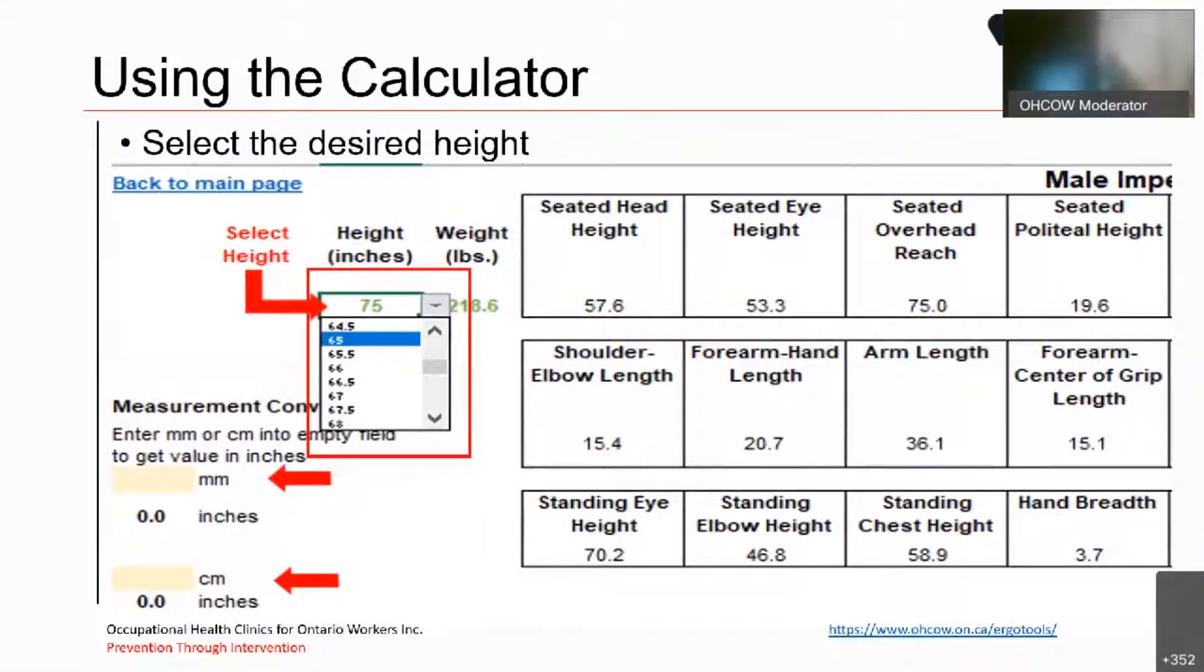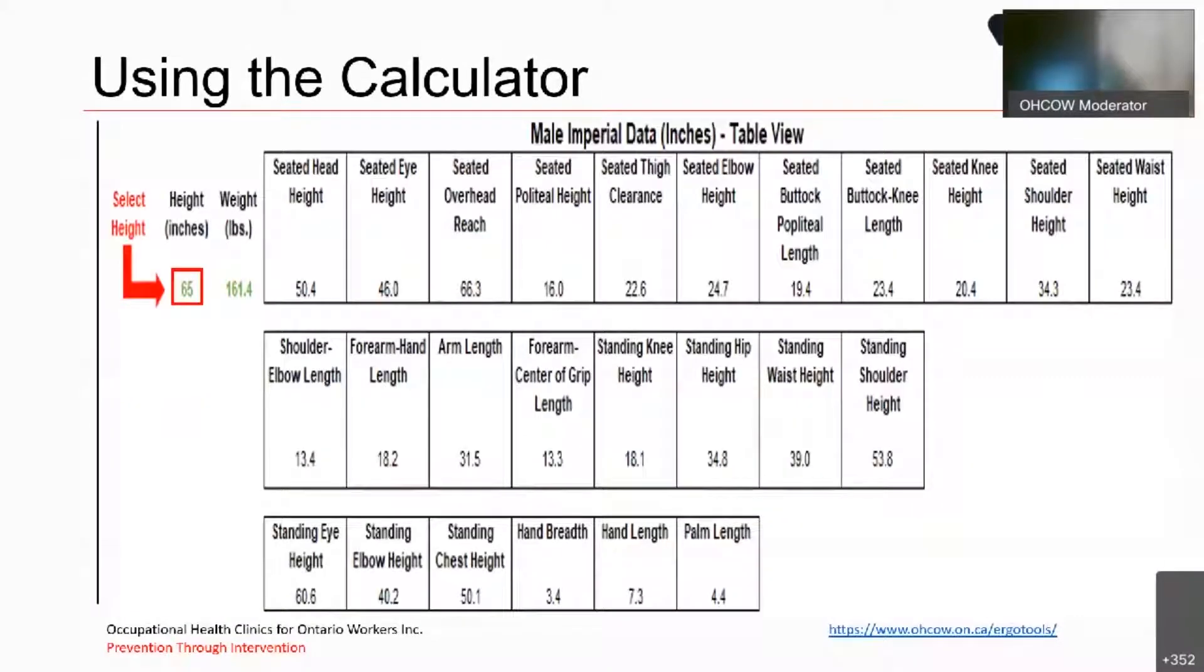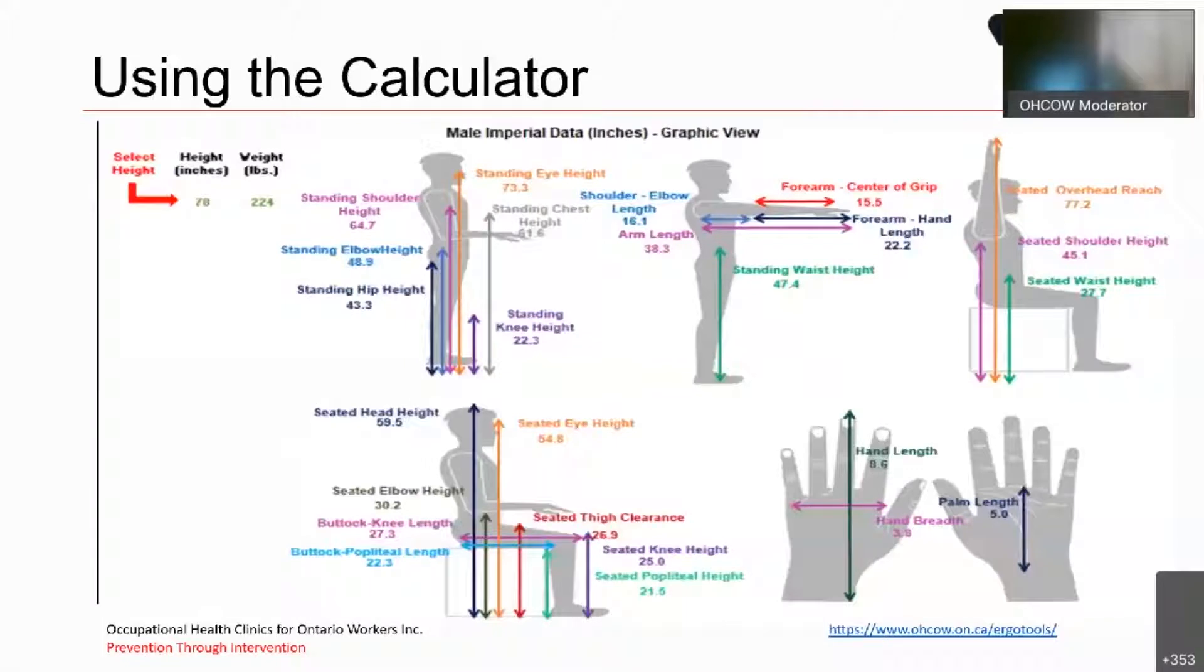So, you can see how, for example, the seated head height went from 57.6 to 50.4. So, this basically shows the complete view that you would get for a male with imperial data for 65 inches from the tool. Now, this would actually show the graphic view, just in case you want to actually see the table difference versus the figure view.